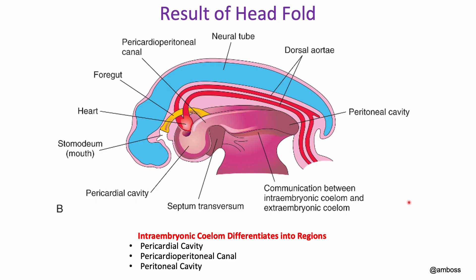After the head fold, the intraembryonic coelom is pushed down and now forms as pretty continuous cavities all the way around the heart and back around. We're going to need to separate the coelom into three different regions: the pericardial cavity, the pleural cavity where our lungs will grow, and the peritoneal cavity more inferiorly. At this point, when everything is connected, we call this the pericardial peritoneal canal — a connection between the peritoneal cavity and the pericardial cavity.